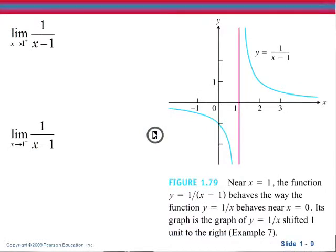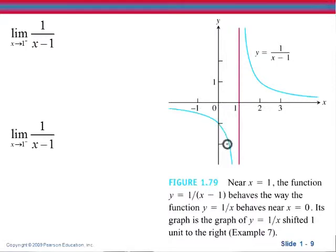Now let's consider some other limits that involve infinity. Here we're looking at the graph of y equals 1 over x minus 1 and thinking about what happens as x approaches 1 from the right and as x approaches 1 from the left. You'll notice as x gets closer and closer to 1 from the right that your y values get larger and larger. And as x approaches 1 from the left, your y values get smaller and smaller.